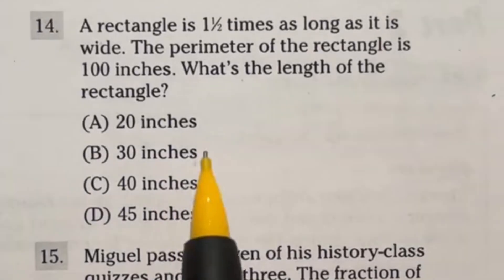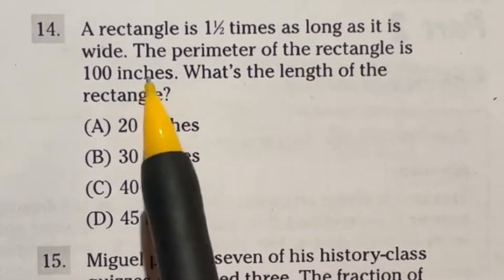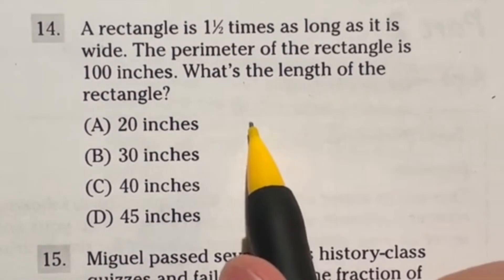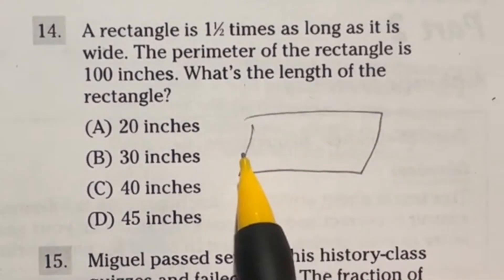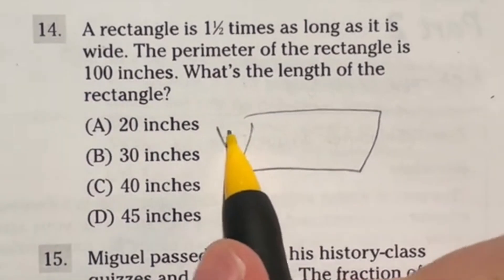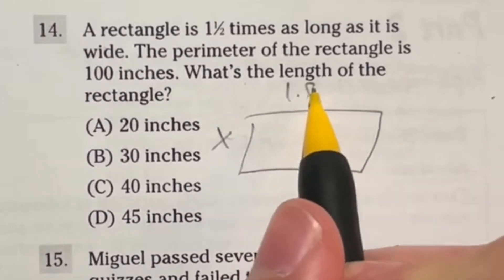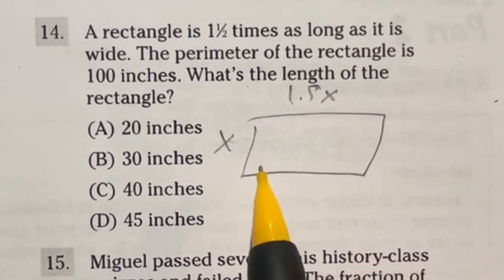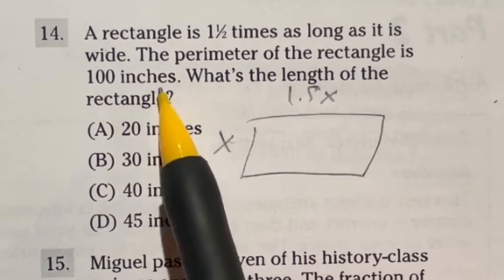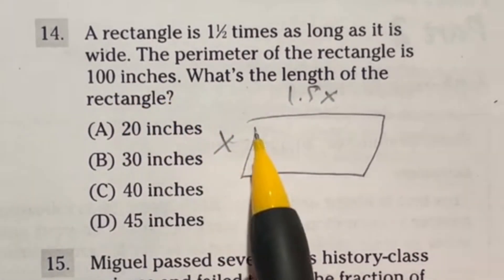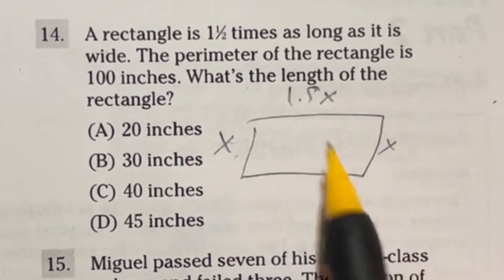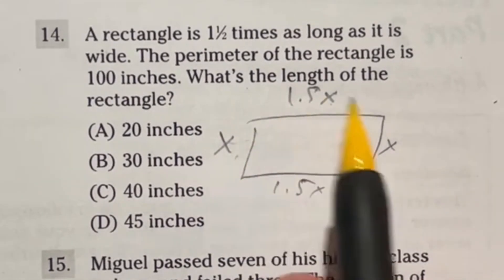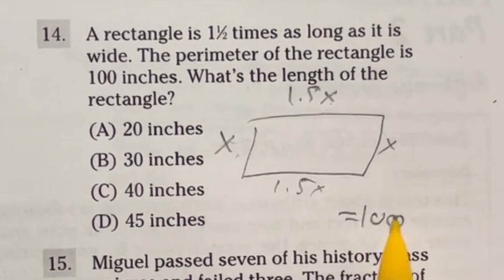Number 14 says a rectangle is 1½ times as long as it is wide. The perimeter of the rectangle is 100 inches. What's the length of the rectangle? So let's see. We have a rectangle. We know that if this guy is X, then this guy is 1.5 times X because it says it's 1½ times as long. Now we're given the fact that the perimeter is 100 inches. Well, how do you find perimeter? You add all four sides together. Well, if this is X, then this is X. If this is 1.5X, this is 1.5X.